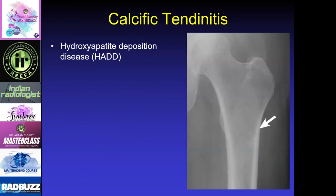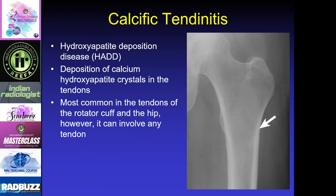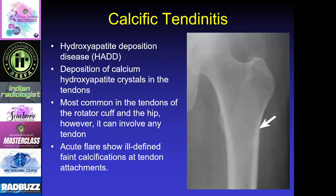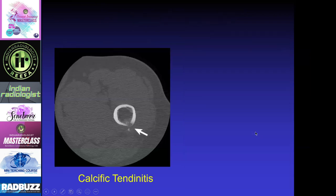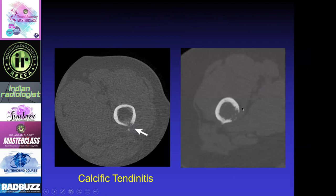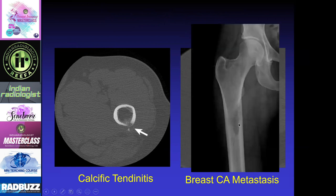Calcific tendonitis is hydroxyapatite deposition in and around tendons, most common in the rotator cuff and hip, but it can appear in any tendon. You typically get into trouble during the acute flare, where you get erosions in the bone and calcifications. One of the key features is to know where your tendon is attached — if you see bony destruction, ask whether this is where a tendon attaches and consider calcific tendonitis. For instance, in the femur we see calcium right where the gluteal muscles attach with some bone erosion. Comparing to a breast cancer metastasis: that lesion is on the medial side, not near any tendon attachment.